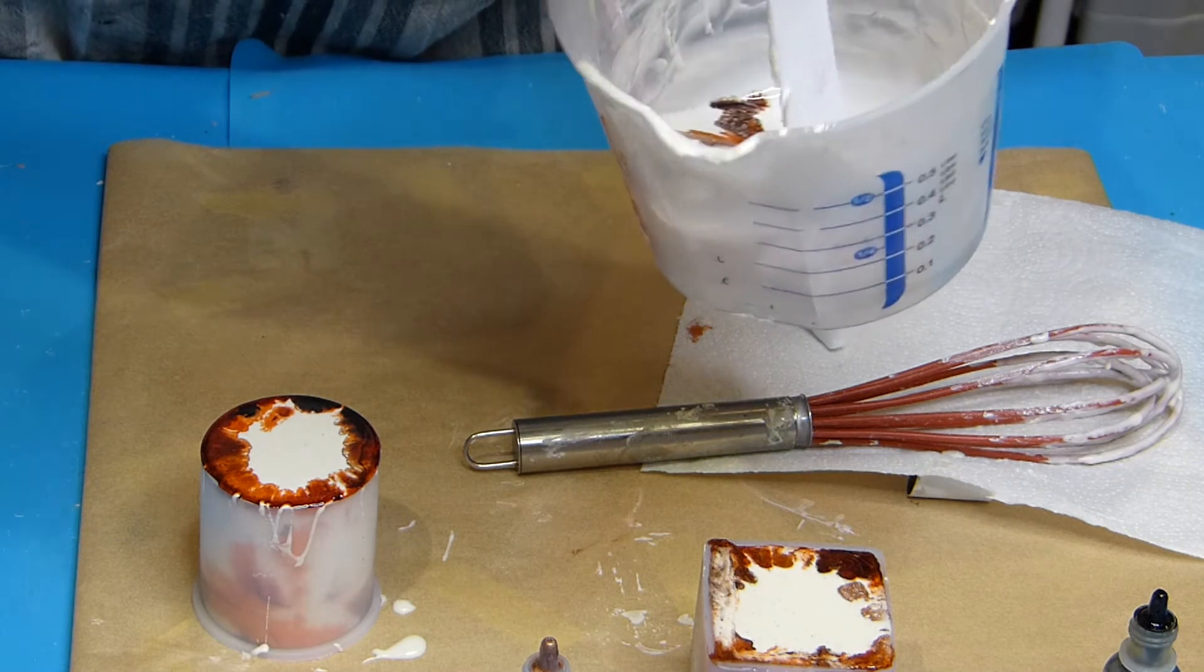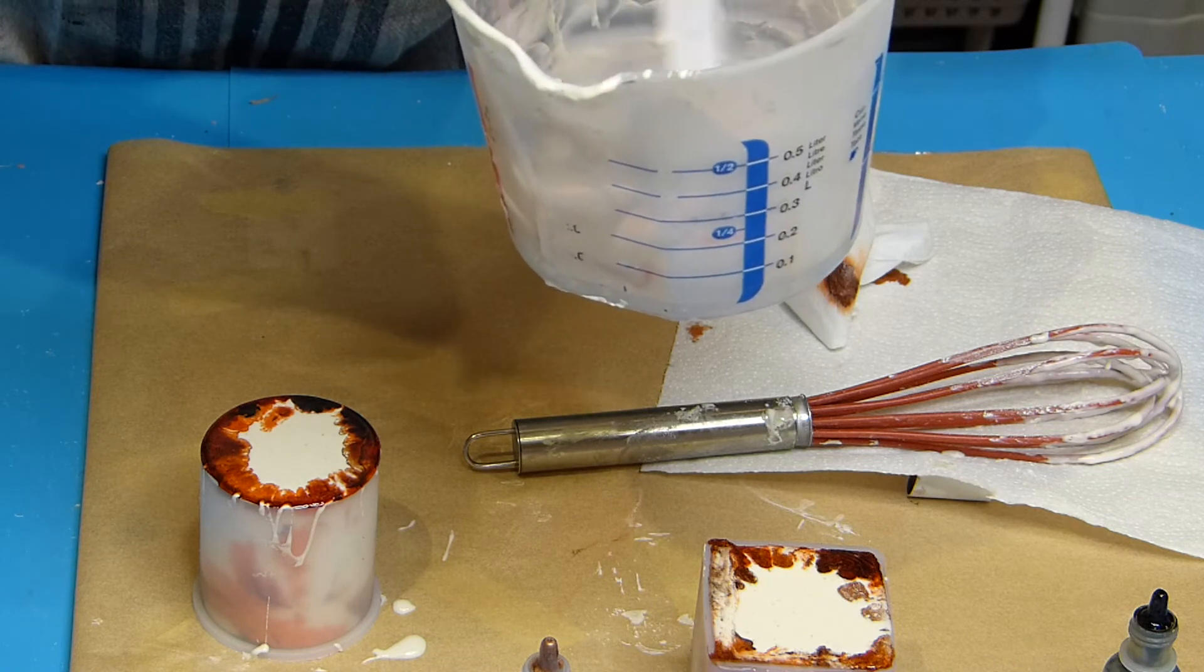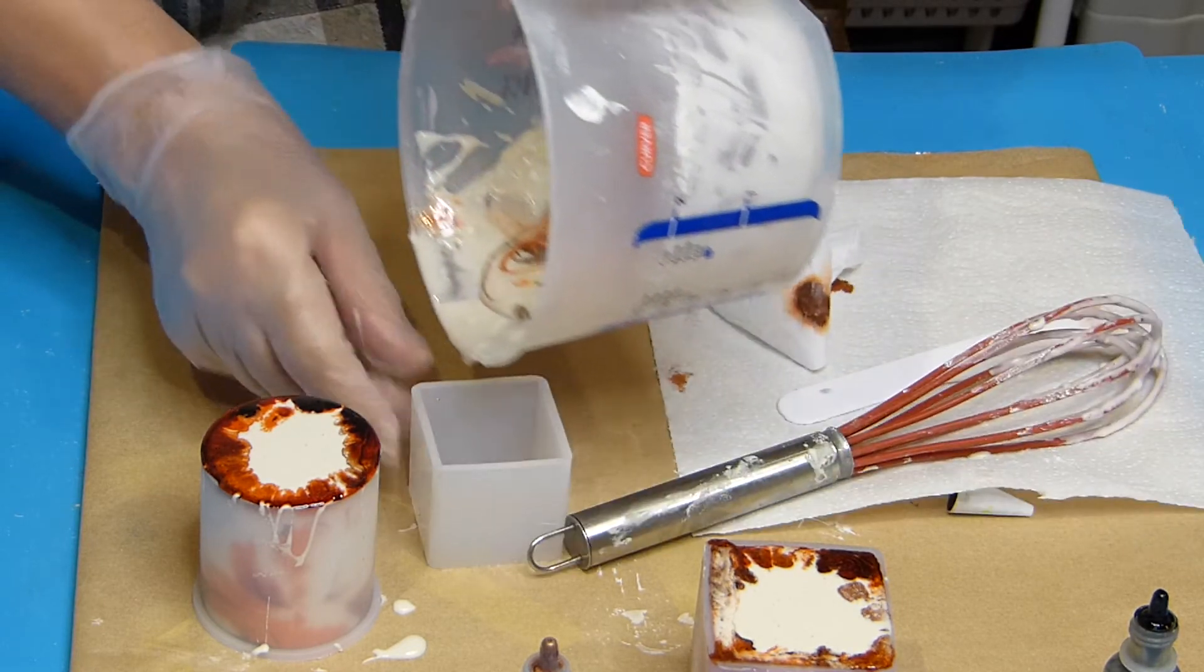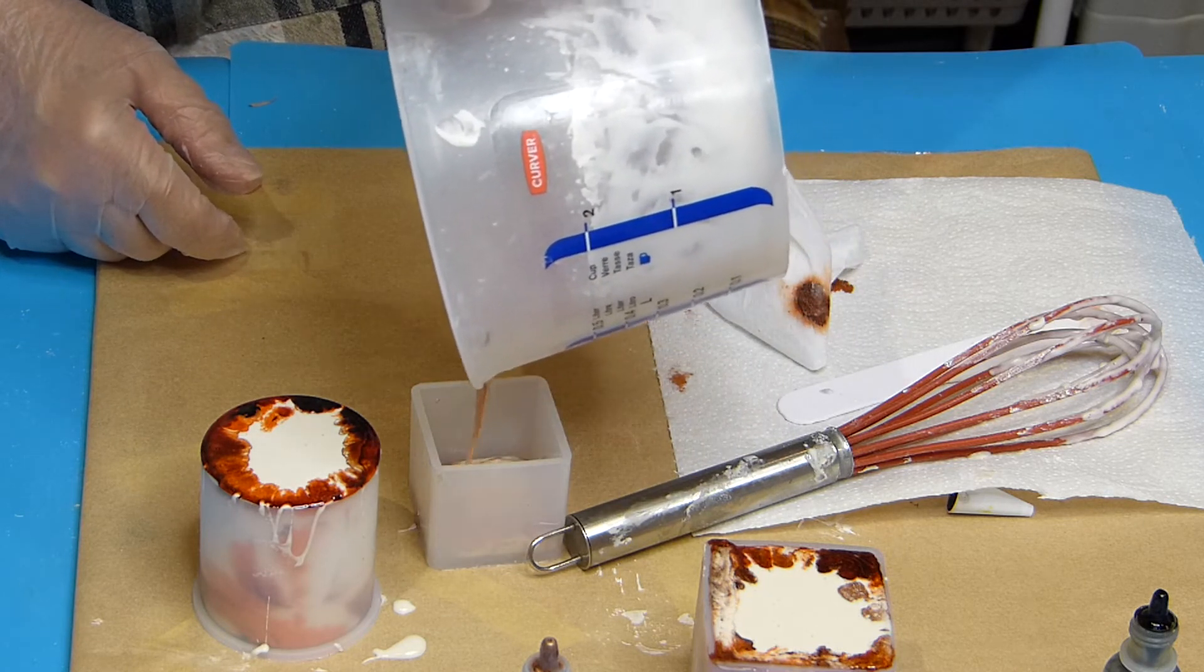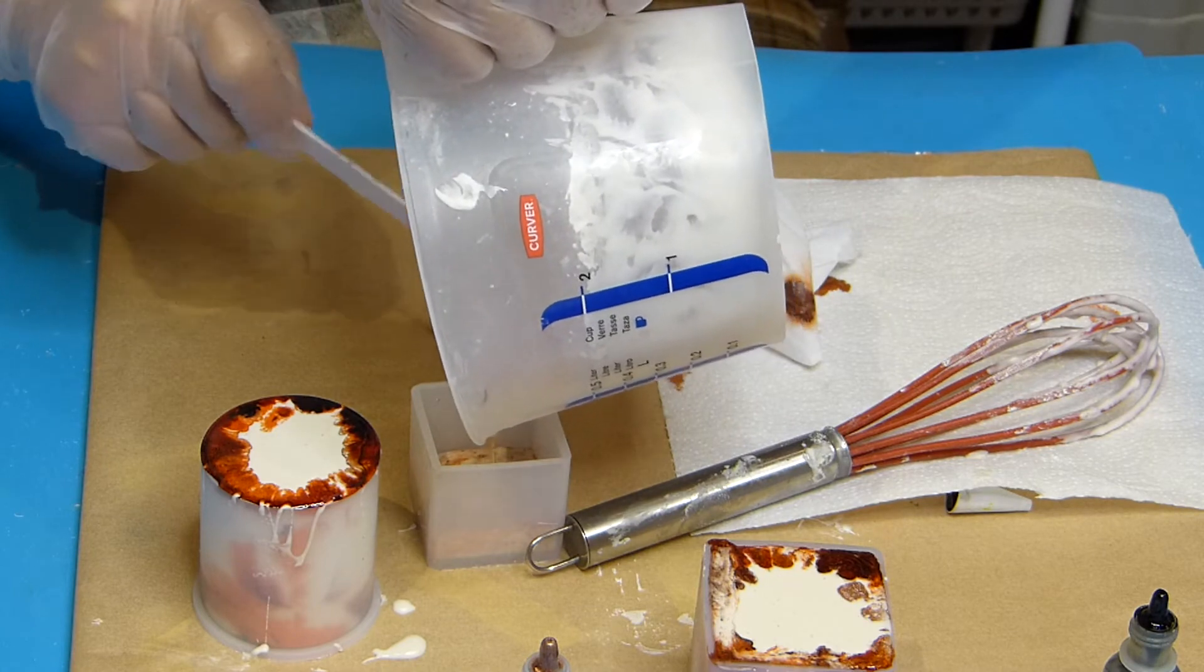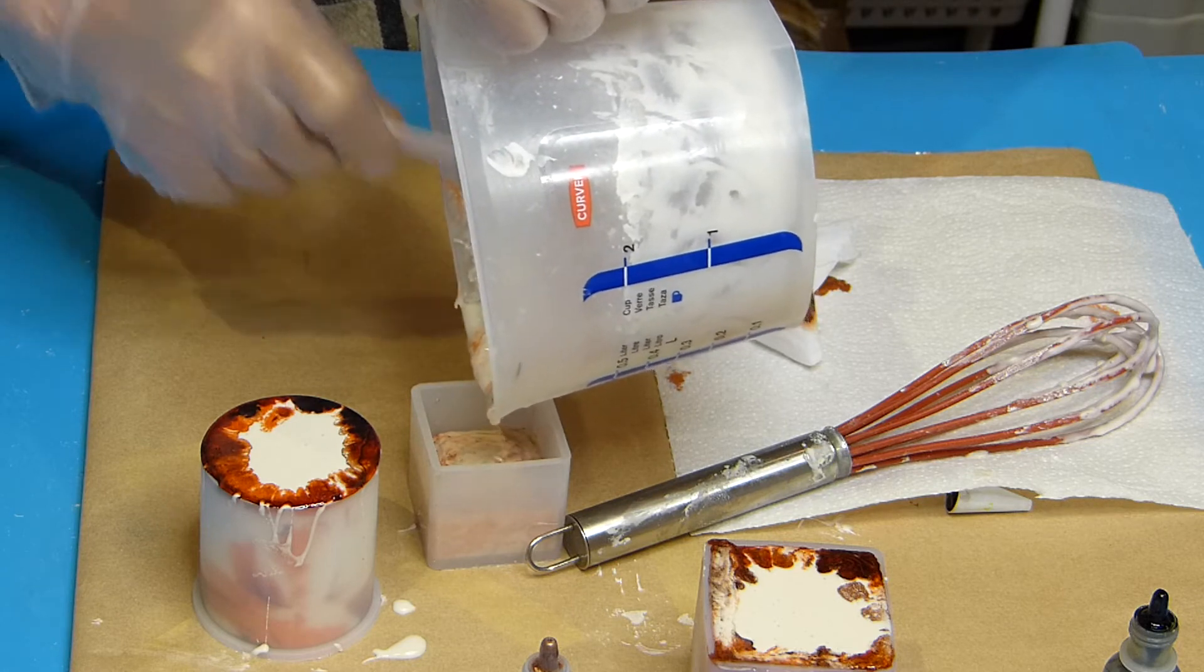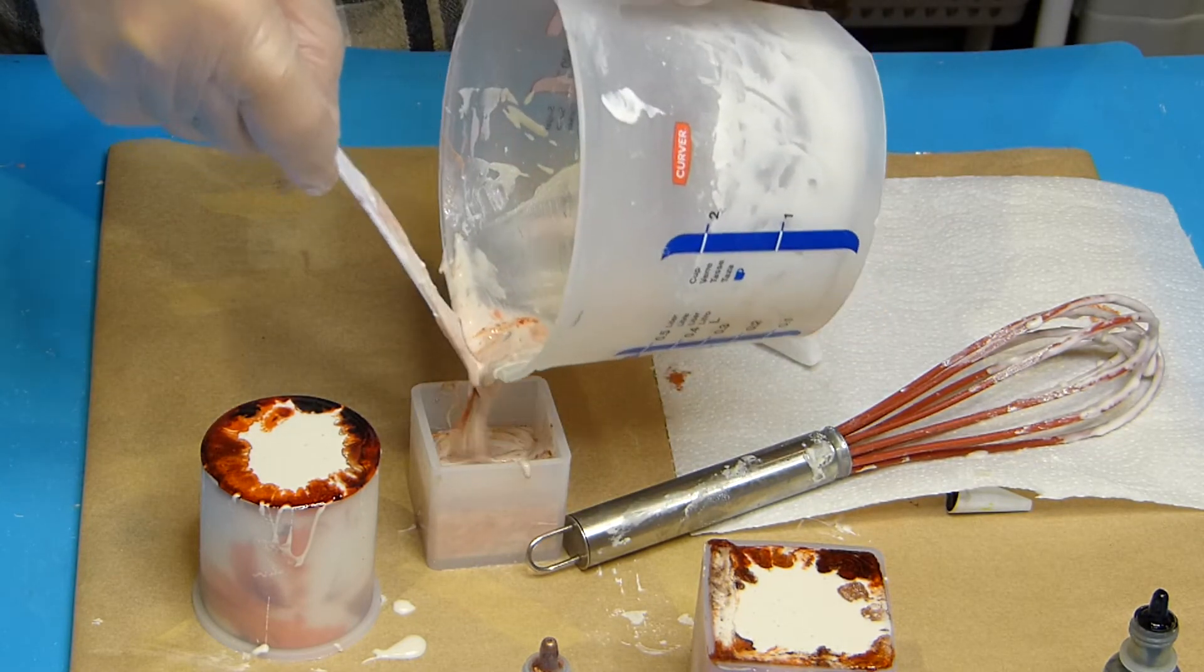And with my stick I will make a small swirl but very fast and not too much, otherwise the ink will completely disappear in the Jesmonite. And I am going to pour in this cube. I tilted my pot when I put the ink and maybe I shouldn't have, so we'll see the result.